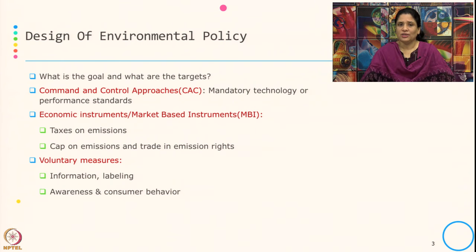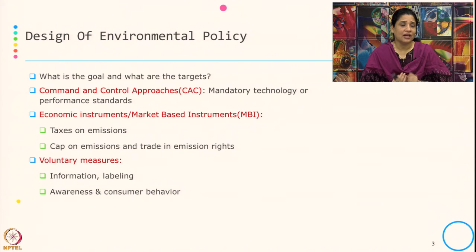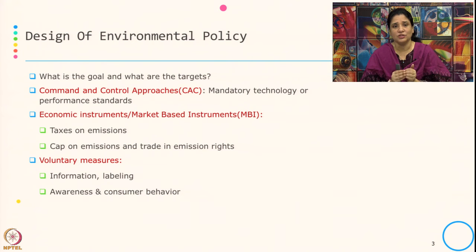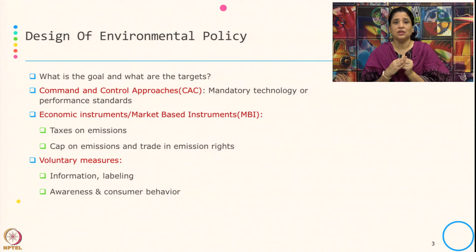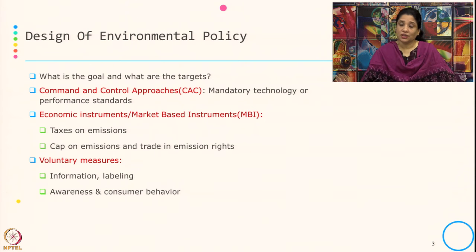With market-based instruments, apart from giving targets, the specific feature is that when you achieve the target or go beyond the target, there is some incentive associated with such instruments. A typical example can be an emission tax — that is, a tax on emission — or cap and trade, which is a cap on emission or the trade in emission rights. Here, the cap deals with the target part and trade deals with emission rights, which is the part of incentive.